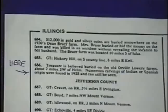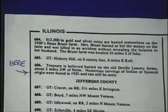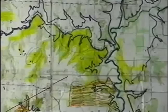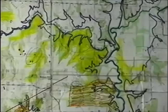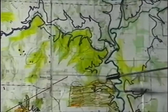This next guide was printed in the early 80s. On page 324 we find entry number 686 at the top of the left column which reads: Treasure is believed buried on the old Orville Lowry Farms about 2 miles southwest of Helm. Numerous carvings of Indian or Spanish origin were found in 1925 and can still be seen. Let's look where 2 miles southwest of Helm is. The township of Helm is this area right here. Exactly 2 miles southwest of Helm puts us in this area right here.